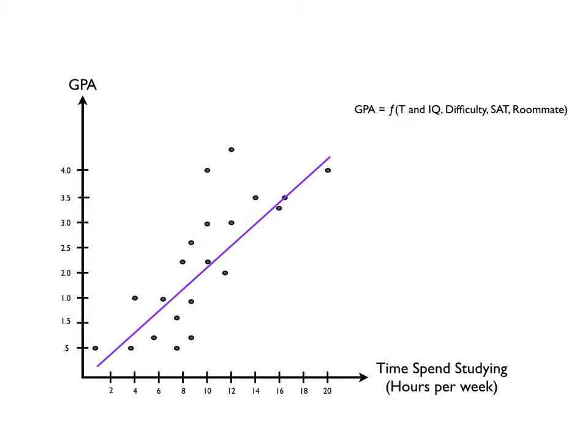And so what we can do is say the GPA is some function of the time you spend studying and these other things: IQ, the difficulty of classes, your SAT score, and your roommate. So the time spent studying is just one factor that affects your GPA. We're controlling these others. Now keep in mind, in this model, what we want to look at is simply the effect of time on GPA holding these other factors constant.